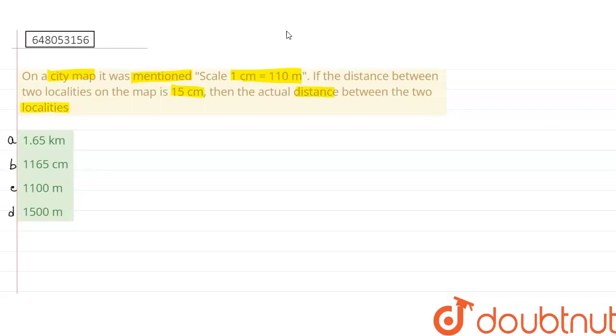दोस्तों, इस question में ये बोला गया है, कि एक city map पर ये लिखा हुआ था, कि city map पर अगर 1 cm का distance है, तो उसका actual में meaning क्या होगा? 110 m. मतलब, अगर city map पर कहीं भी 1 cm का distance दिख रहा है आपको, तो उसका actual में distance क्या हो जाएगा? 110 m.